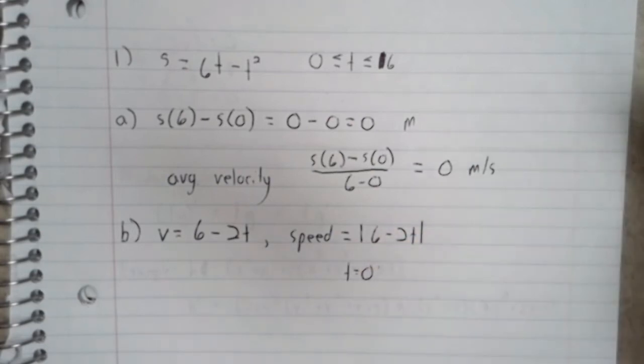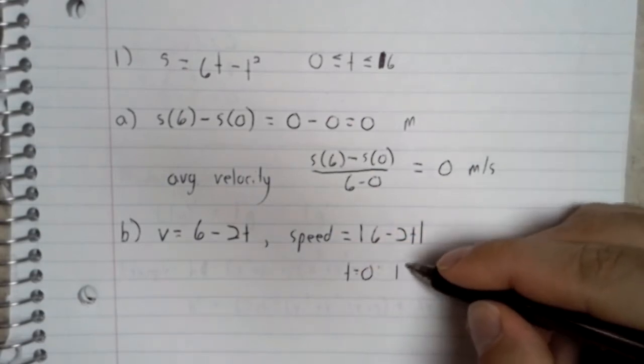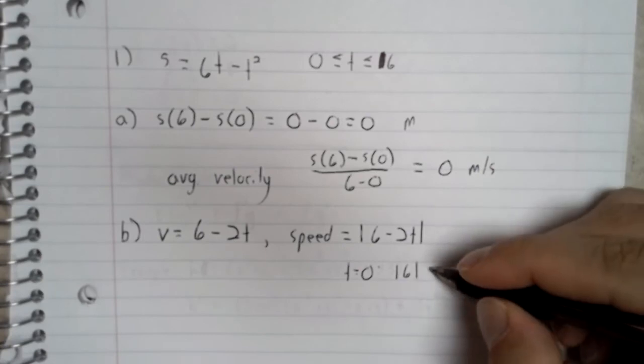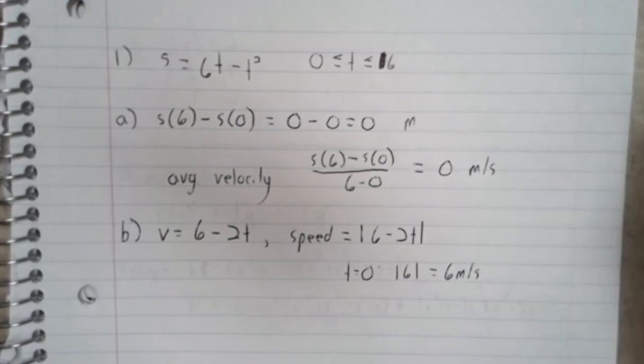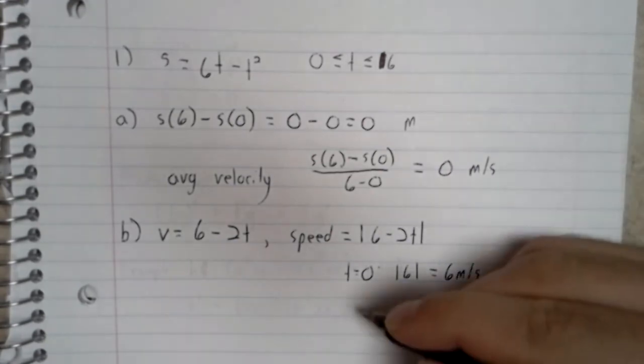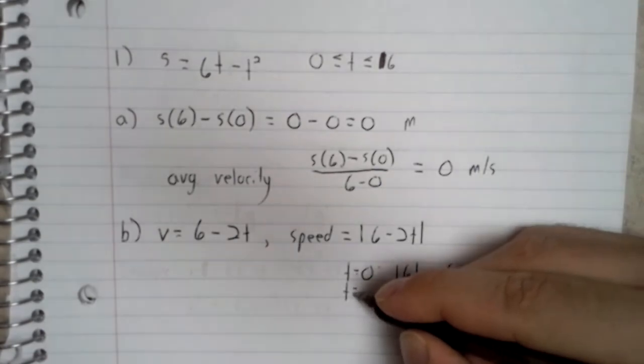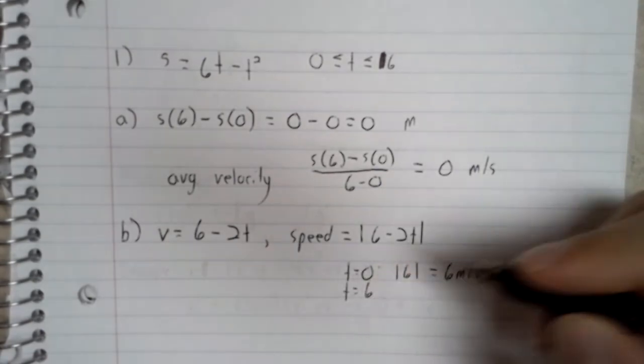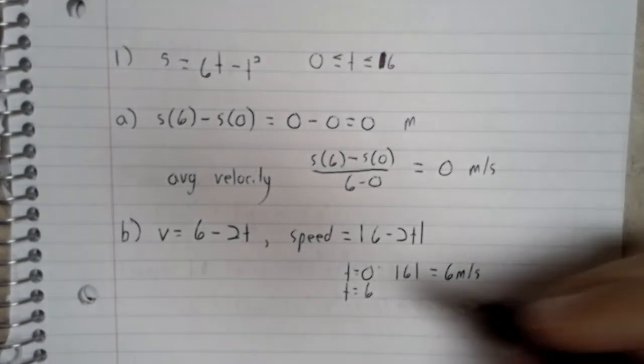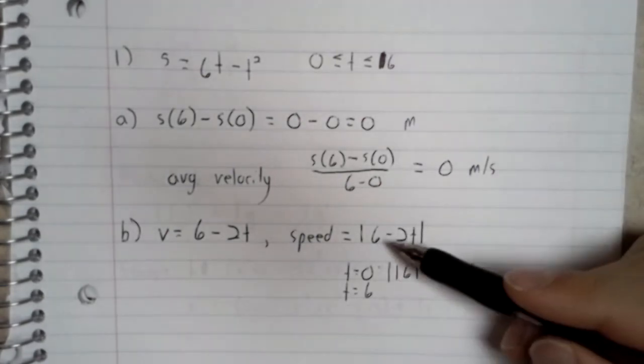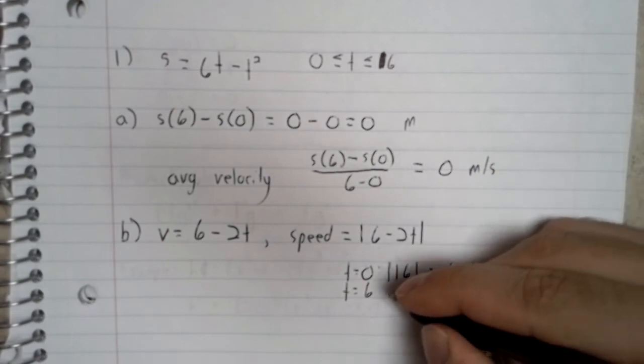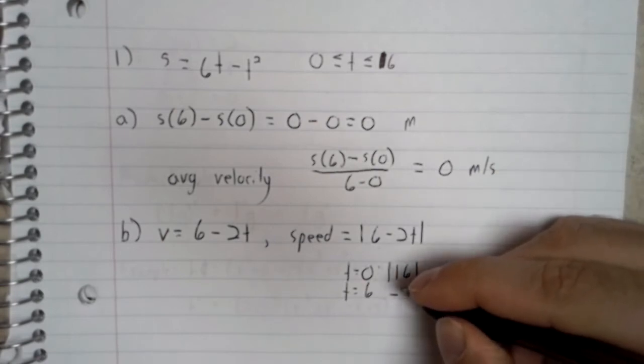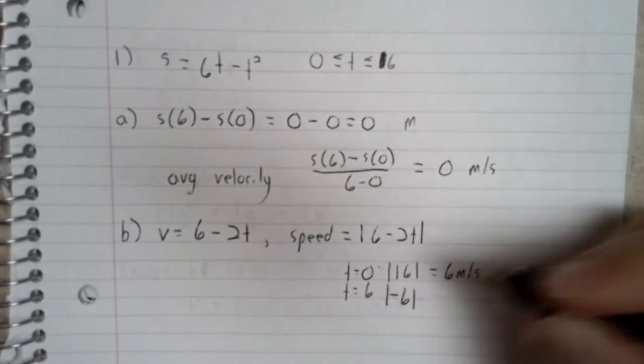At 0, the absolute value of 6 is 6 meters per second. At 6, 6 minus 12.